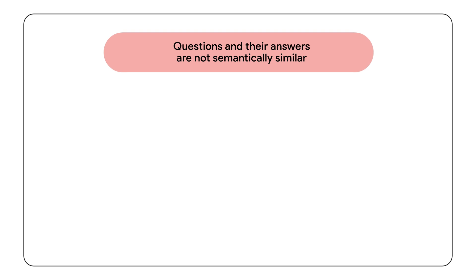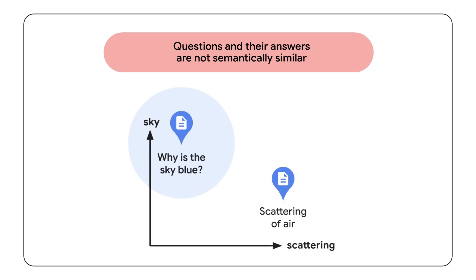Simple similarity search often leads to poor results in Q&A systems like RAG, due to the 'question is not the answer' problem. This is because questions and their answers often have very different meanings. For example, the question 'why is the sky blue' and its answer 'sunlight scattering causes the blue color' are semantically distinct.